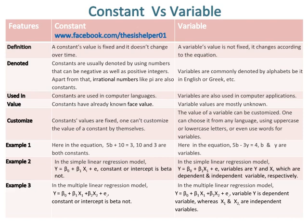Constants values are fixed. One can't customize the value of a constant by themselves. Whereas the value of a variable can be customized. One can choose it from any language, using uppercase or lowercase letters, or even use words for variables.